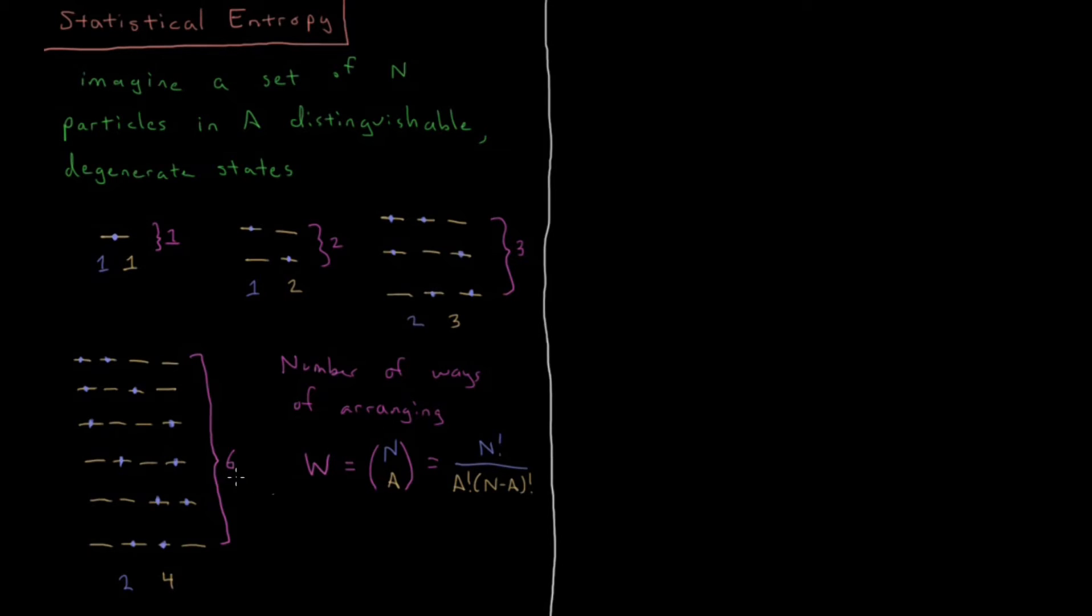And if you plug in those numbers for 1,1, 1,2, 2,3, and 2,4, you'll see that you'll get W in each of these cases. And this W here, we're going to call it the degeneracy factor, or you could say the degeneracy of the system.